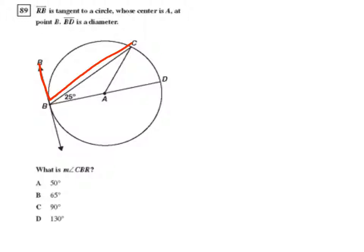Okay, well, what I know is that since BD here is a diameter and RB is a tangent, then they are perpendicular to each other. So this forms a 90 degree angle.